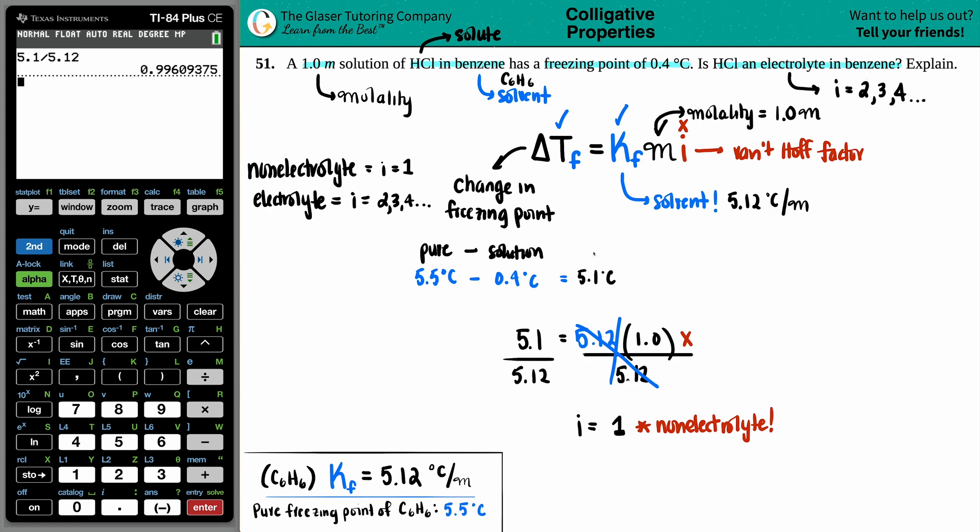And the reasoning behind it is the math. Everything that we went through, we found the Van't Hoff factor of 1. That means you just have the one compound, no ions in the solvent.